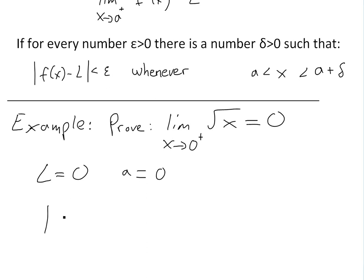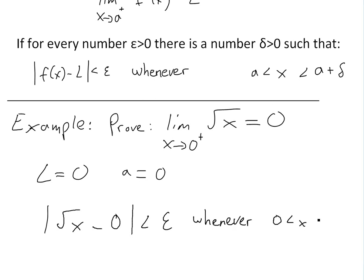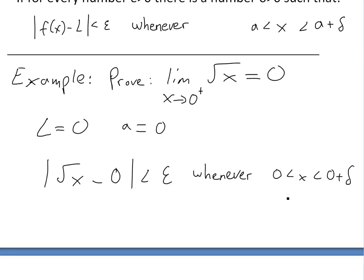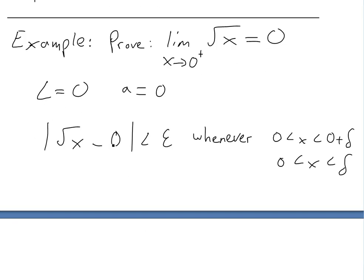Writing this down, f(x) is square root of x, so we need |√x - 0| less than epsilon, whenever 0 less than x less than zero plus delta, which simplifies to: √x less than epsilon, whenever 0 less than x less than delta.